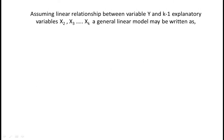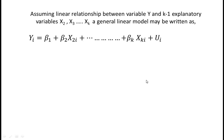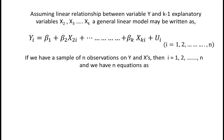This way we can frame a linear regression model considering multiple variables. Now, assuming a linear relationship between variable y and k-1 explanatory variables x2, x3, ..., xk, a general linear model may be written as: y_i = β1 + β2*x2i + ... + βk*xki + u_i, where i goes from 1 to n.